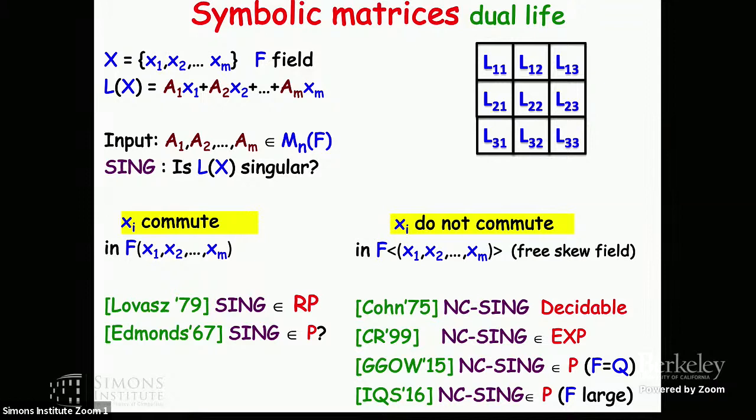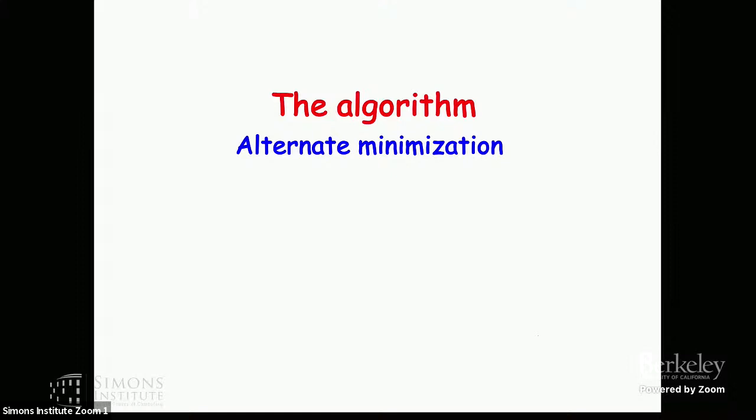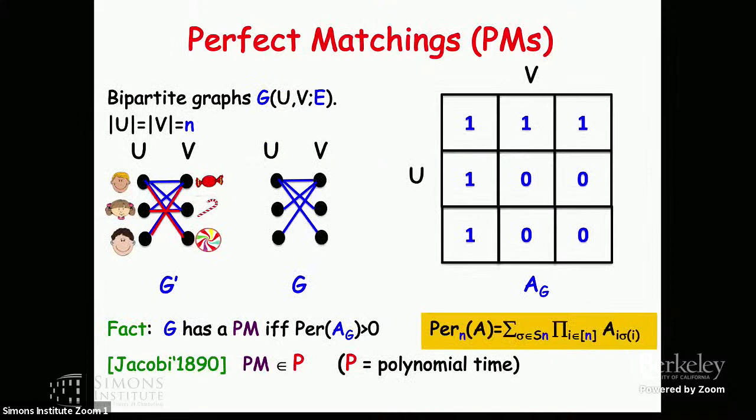This is a gradient-descent type algorithm for the non-commutative singularity problem, working over the rationals or complex numbers. Soon after, it was proved using different algebraic methods for essentially any field. Now let's turn to algorithms. The algorithm we'll employ for solving this is alternating minimization. Let's go back to the baby problem of perfect matching and then apply it to the non-commutative singularity problem.